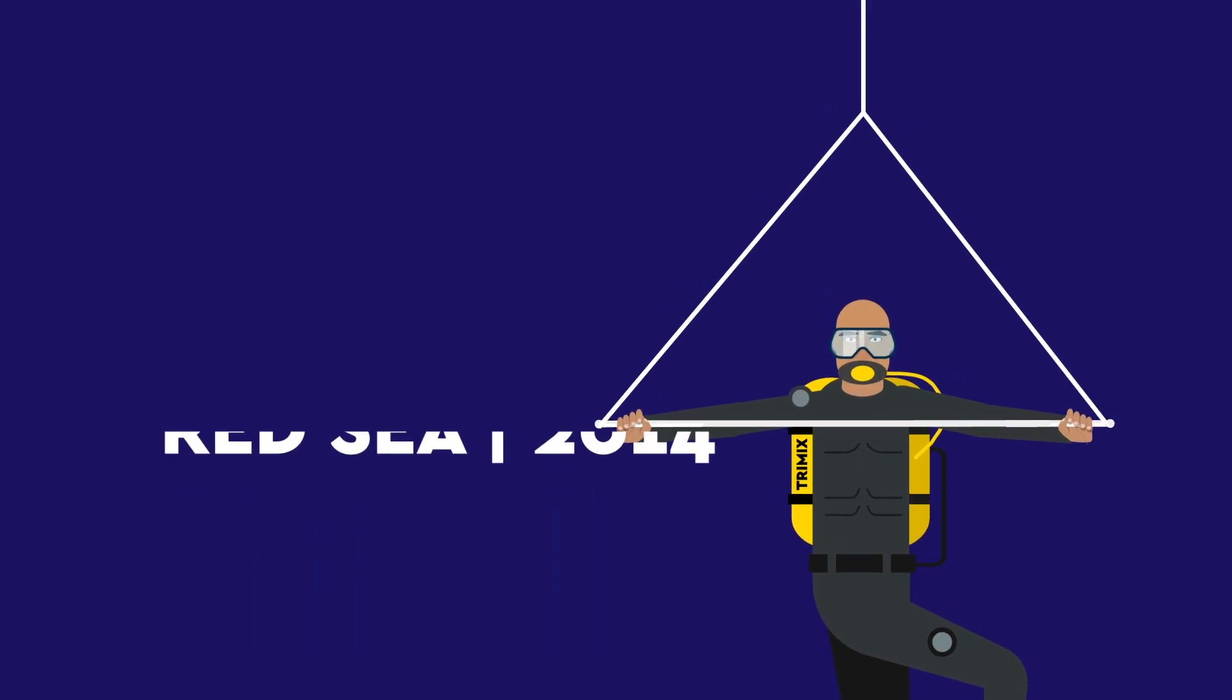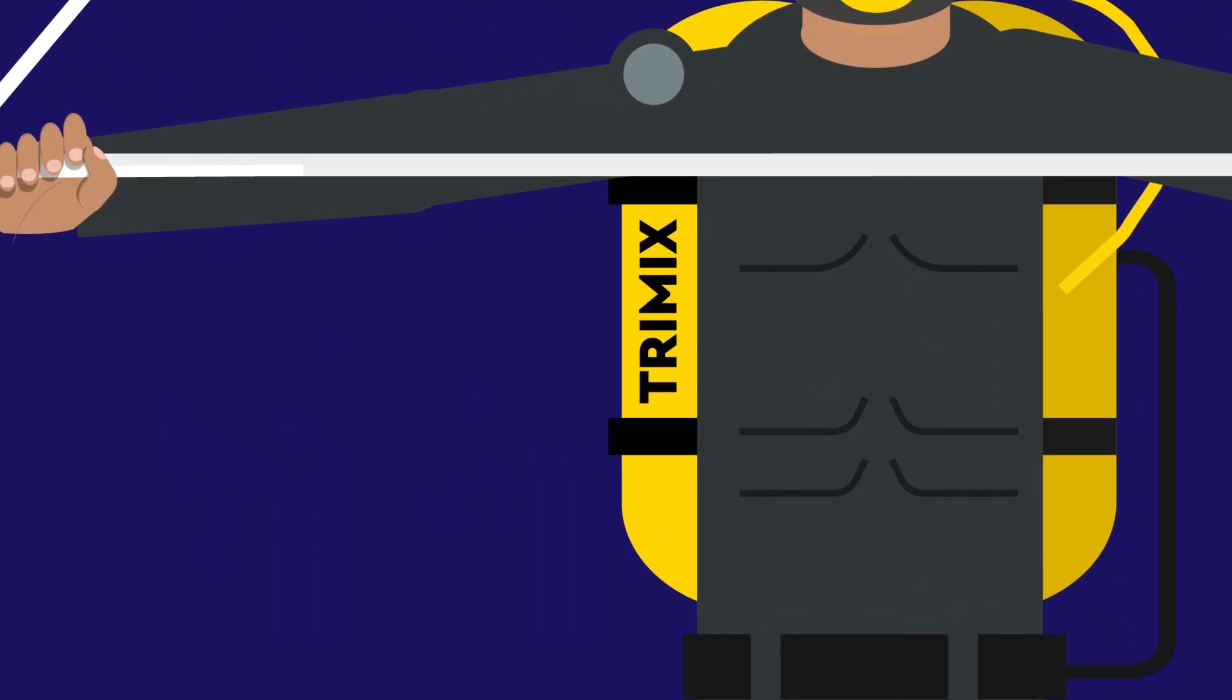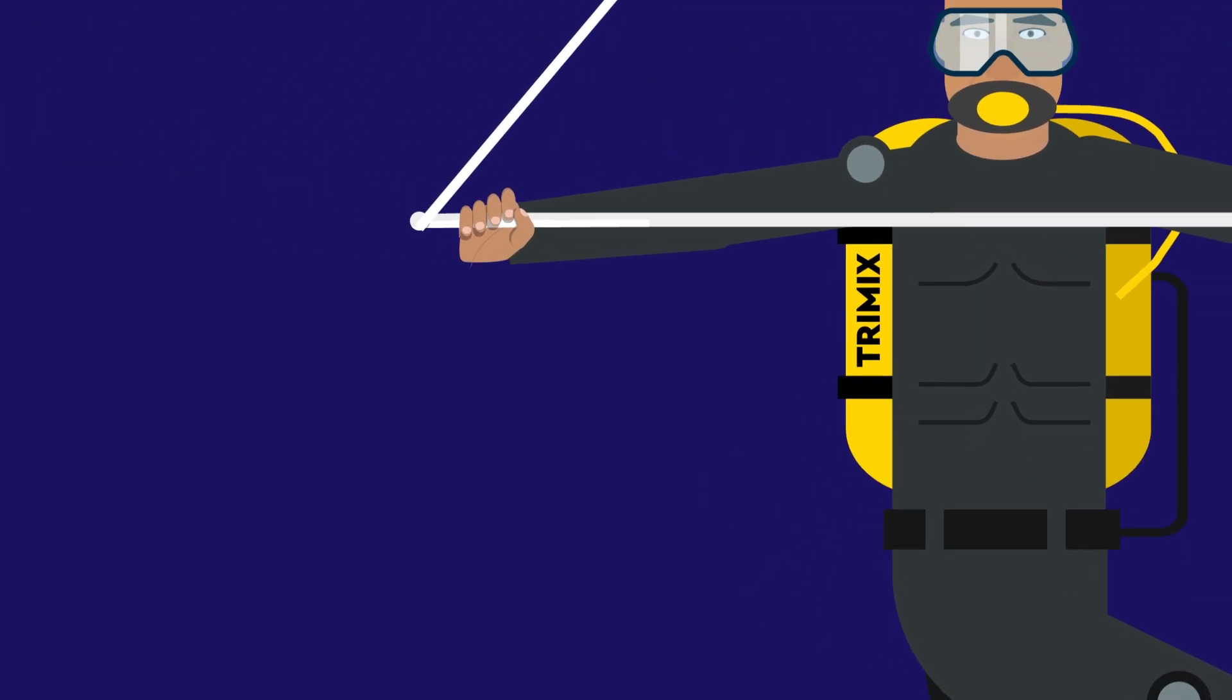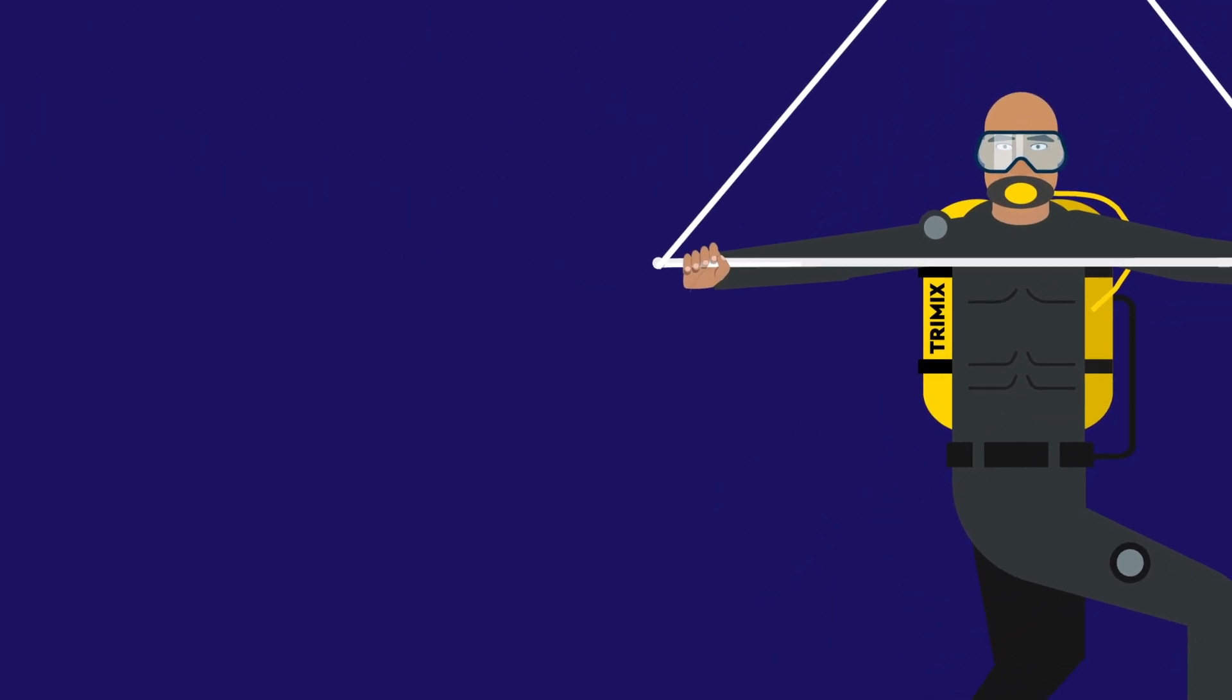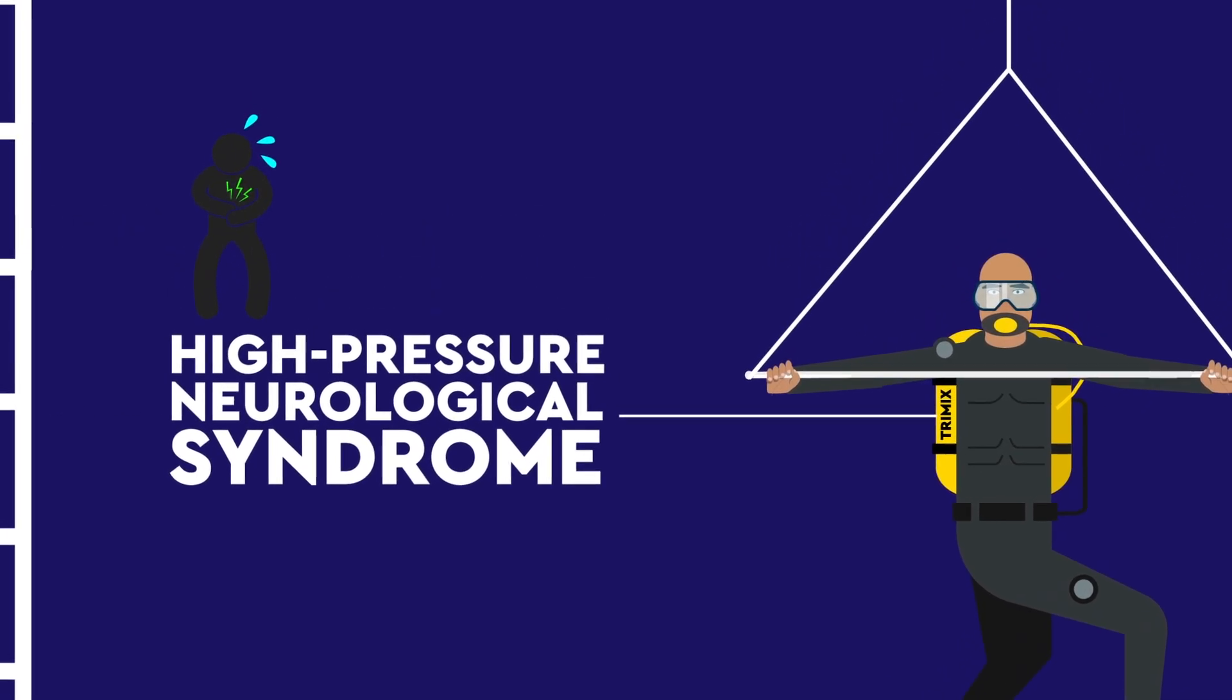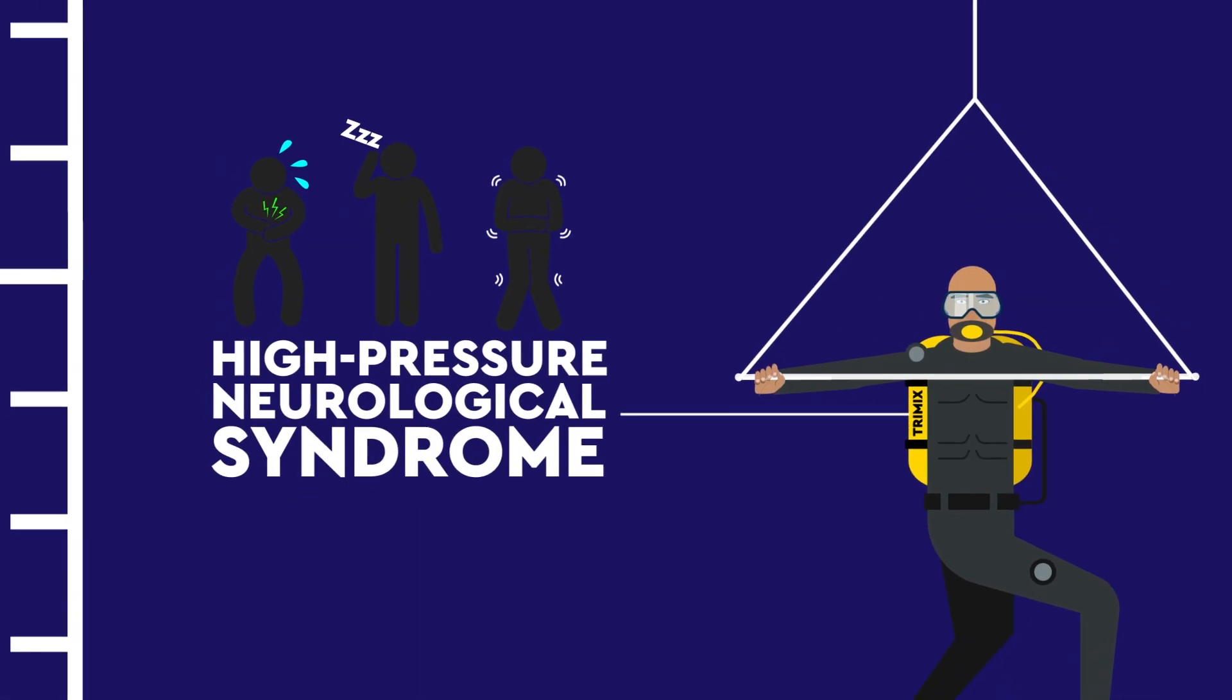To help him reach this depth, he breathed a mixture of nitrogen, oxygen, and helium to avoid the problems of nitrogen narcosis. However, breathing helium at high pressures has its own risks, including high pressure neurological syndrome, which can cause nausea, sleeplessness, and involuntary muscle jerks.